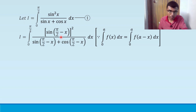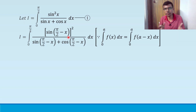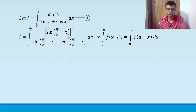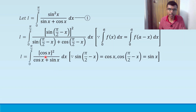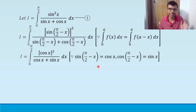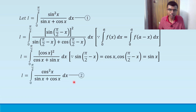Now, what is sin(π/2 minus x)? It is cosx. And what is cos(π/2 minus x)? It is sinx. So instead of sin(π/2 minus x) there is cosx, and instead of cos(π/2 minus x) there is sinx. So cos(x) whole square is nothing but cos²x. Mark this as equation two.